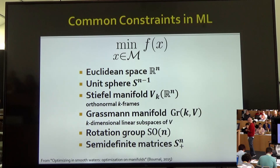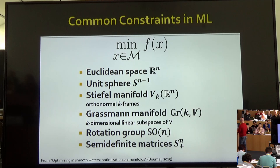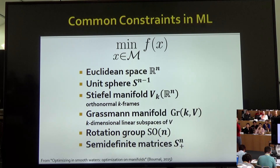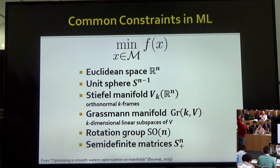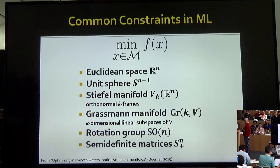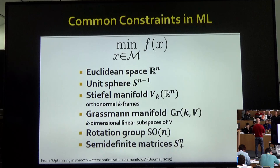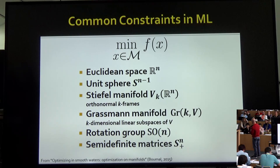The types of constraint sets we have in machine learning are often very structured. Sometimes it's as simple as a vector of unknowns, like finding a separating hyperplane in an SVM. But very commonly we optimize over unit vectors, or over the Stiefel manifold — the set of k orthogonal vectors in R^n, i.e., k-by-n matrices whose columns are orthogonal. This appears in problems where you're computing a basis for some space.